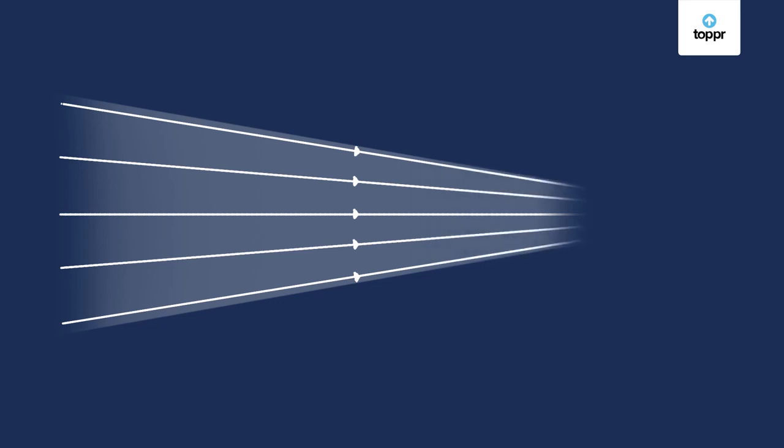Converging rays come closer as they travel. They eventually meet at a single point. However, there are some beams that never diverge or converge.